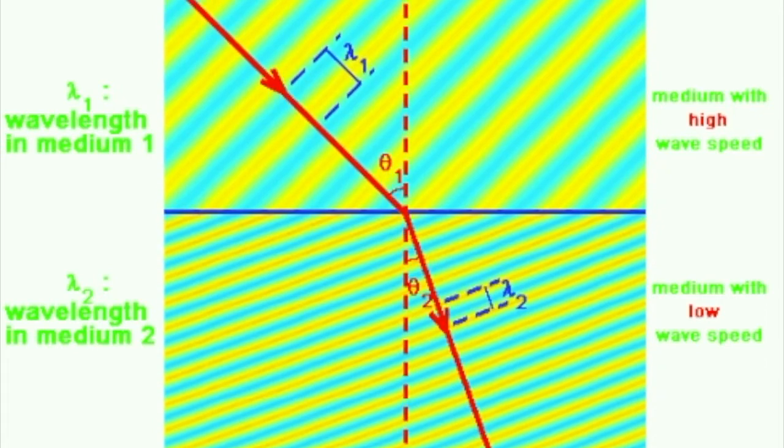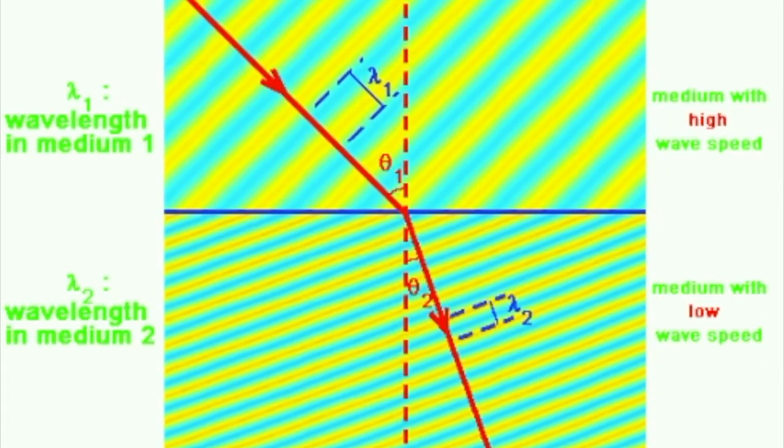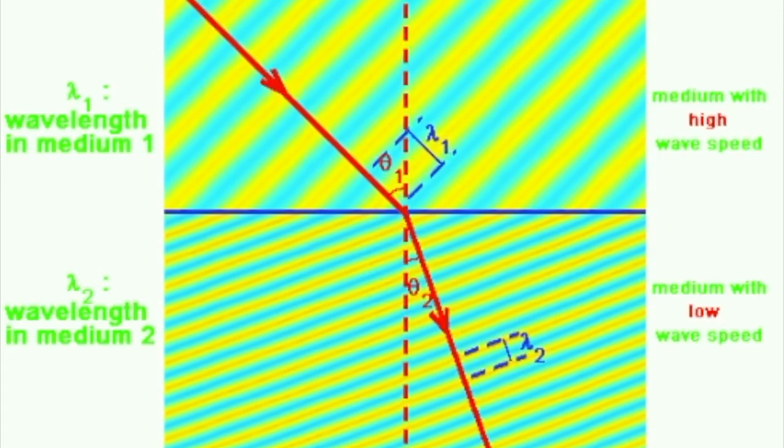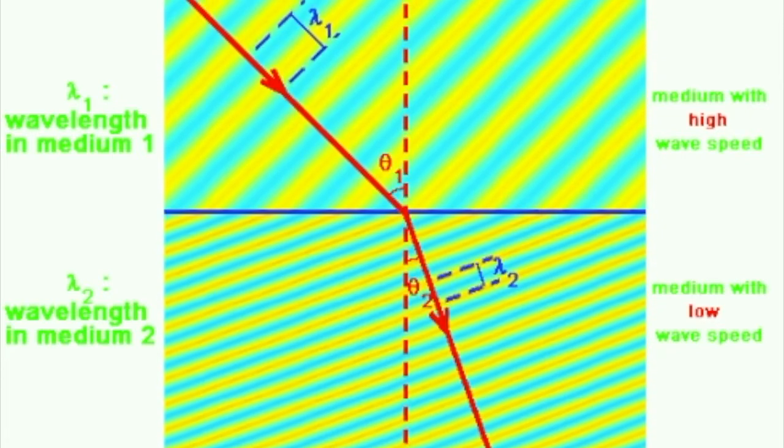The wavelength is longer where the speed is faster, and it's shorter where the speed is slower. The factor by which the wavelength changes is exactly the same as the factor by which the wave speed changes.